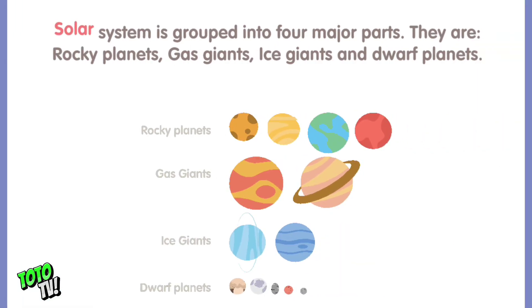Solar system is grouped into four major parts. They are rocky planets, gas giants, ice giants, and dwarf planets.